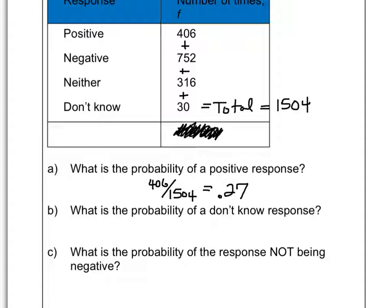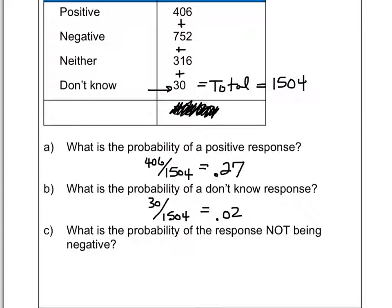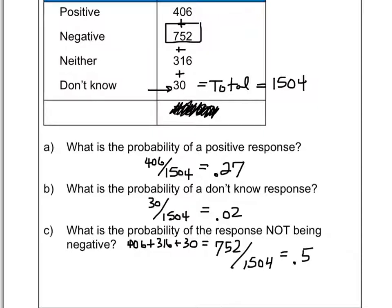For the probability of a 'don't know' response: there are 30 total out of 1,504, giving a decimal of 0.02. For the probability of responses not being negative: take 406 (positive) plus 316 (neither) plus 30 (don't know), which totals 752. So there are 752 responses that are not negative out of 1,504 total, giving a probability of 0.5 — essentially a 50/50 chance of being negative or any one of the other three.